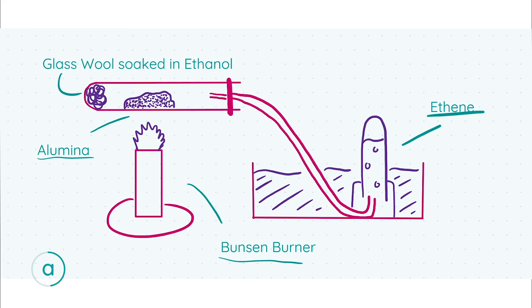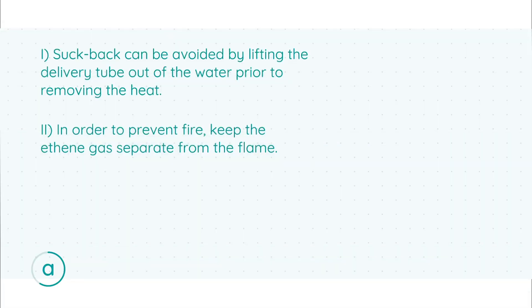For this diagram there was a total of nine marks. The breakdown was: three marks for including the glass test tube holding the ethanol-soaked glass wool, three marks for including the heat source (the Bunsen burner), and three marks for including the alumina inside the test tube.